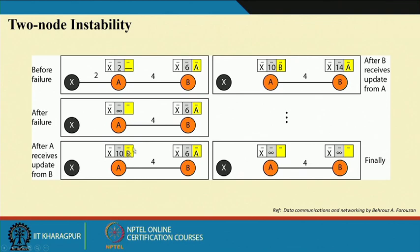Though looking at just three nodes may seem confusing, in a large network this can very much happen based on when you receive these messages. Subsequently, B updates through A and finds it is 10 plus 4 = 14, and this goes on until they end up at infinity — meaning non-reachability. This is the two-node level instability, a typical situation that may arise in distance vector scenarios.